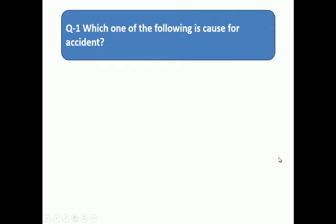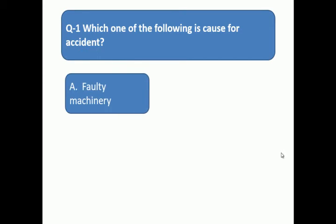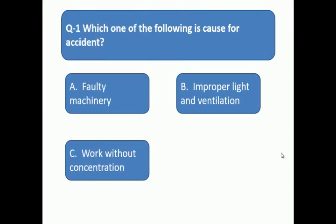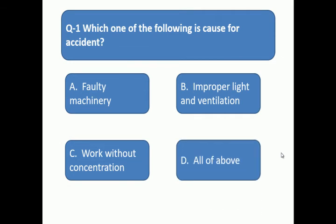Question number 1: Which one of the following is the cause of accident? Option A: faulty machinery, B: improper light and ventilation, C: work without concentration, D: all of above.